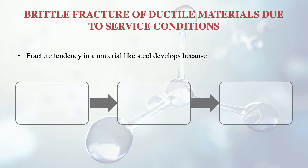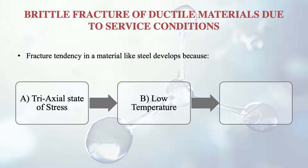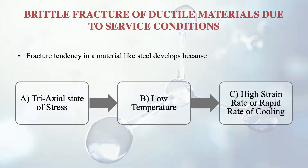Fracture tendency in a material like steel develops because of three main reasons. First is the tri-axial state of stress. Second is low temperature, as discussed. Third is the high strain rate or rapid rate of loading. The stress is acting in three directions — it is tri-axial — making it very complicated. Temperature and strain rate, as discussed in the previous session, are also very important.